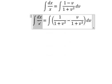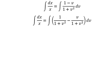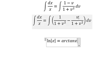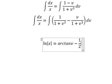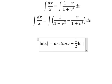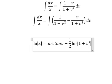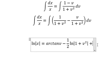The integration of this gives ln of the absolute value of x. This gives arctan of v. This gives negative one-half ln of the absolute value of 1 plus v squared, plus c.